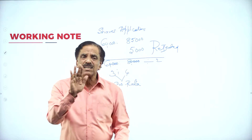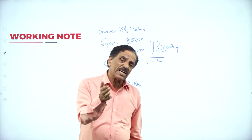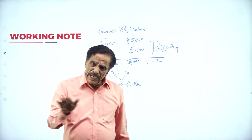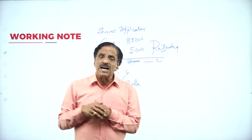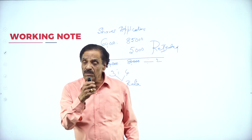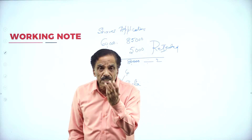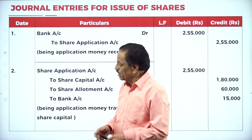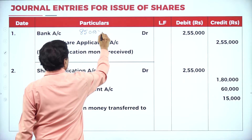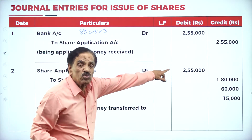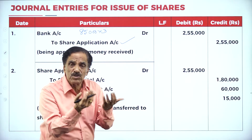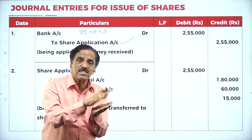The journal entries: First entry — Bank Account Dr. to Share Application Account. You got 85,000 applications at the rate of rupees 3, so you receive 2,55,000. Entry: Bank Account Dr. 2,55,000 to Share Application Account 2,55,000. It is a receiving entry.